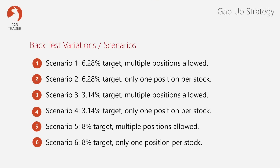At FabTrader, we don't simply follow the original rules — we research variations and look for a better, more risk-adjusted version of the strategy. So I tested six scenarios. Scenario 1 is the base strategy: 6.28% target with multiple positions allowed per stock. Scenario 2: 6.28% target but only one position per stock — if a stock is already in holding and a signal comes again, you skip it. Scenarios 3 and 4 are the same as 1 and 2 respectively, but with a 3.14% (1 pi) target for faster churning. Scenarios 5 and 6 use an 8% target — again with multiple positions and with only one position per stock.